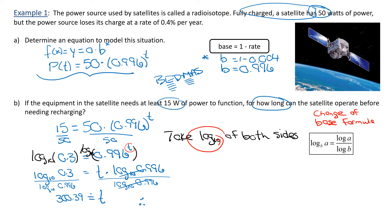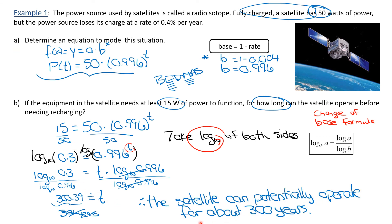Therefore, what does that 300 number mean? T represents time in years. So the satellite could potentially run for 300 years without needing to replace the battery — it just turns into space junk. We have 300.39, so we don't call that 301 years because it wouldn't last 301 years. Therefore, the satellite can potentially operate for about 300 years.